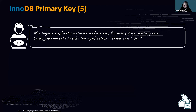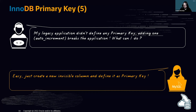If adding an auto-increment column breaks the application because the application wasn't expecting that key, what can you do?